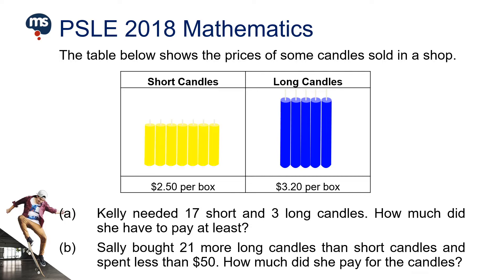Let's take a look at some word problems. The table below shows the prices of some candles sold in a shop. Short candles cost $2.50 per box, and there are 7 short candles in each box. Long candles cost $3.20 per box, and there are 5 long candles in each box.